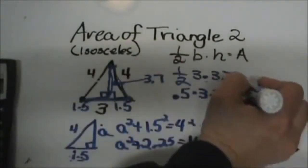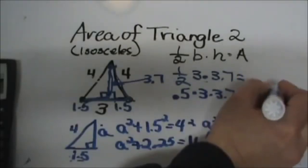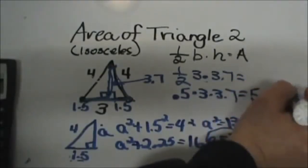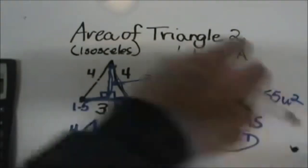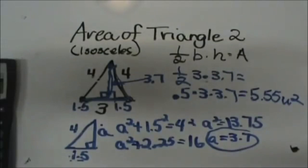So 0.5 times 3 times 3.7 gives me an area of 5.55 square units. If it's inches it's square inches, if it's meters it's square meters, or if it's centimeters it's square centimeters. And that's how you find the area of an isosceles triangle.